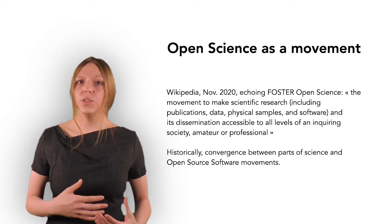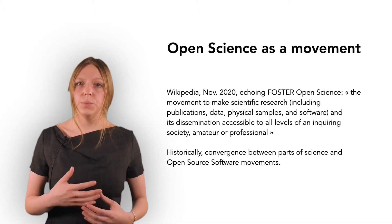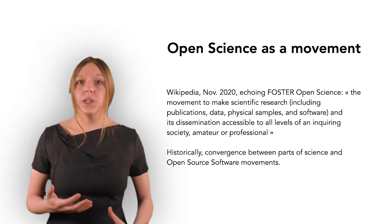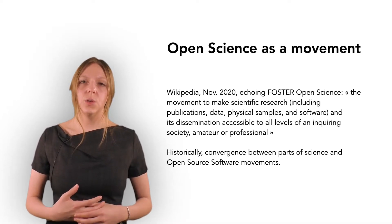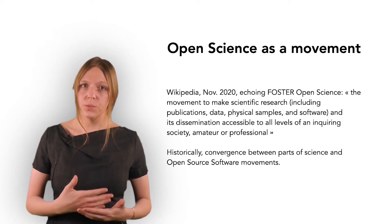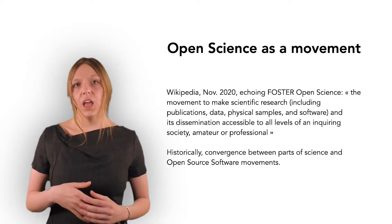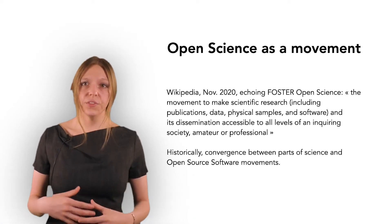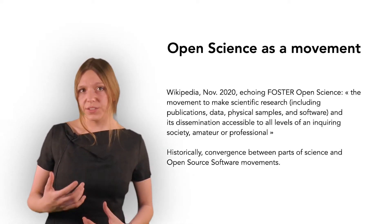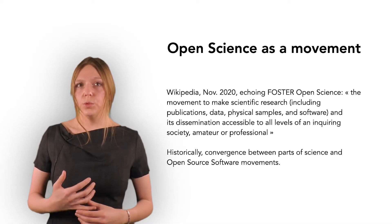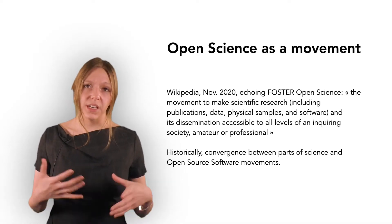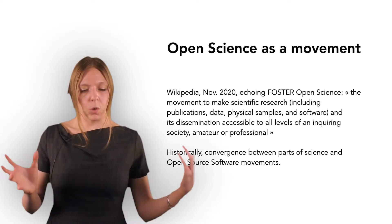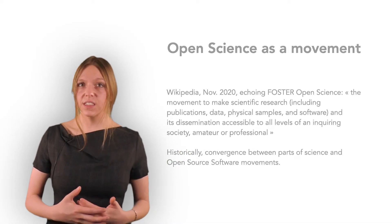Among them are a number of scientific movements to improve specific fields. One of those that we will encounter in several places in this course is rooted in psychological science. Things like preprints actually owe more to life sciences and physics. Another important movement that contributed to open science is the open source software movement. And the history of open science is still being written.